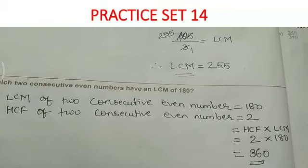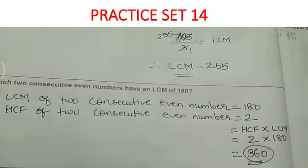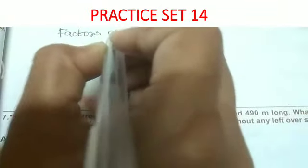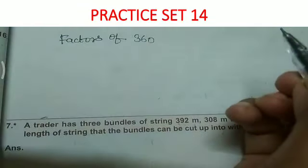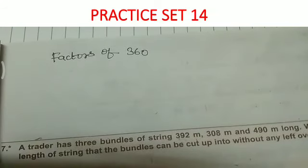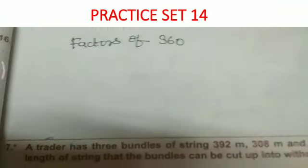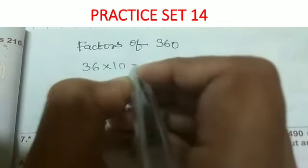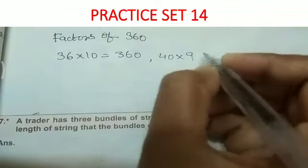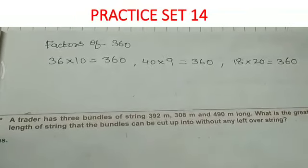We have to find two consecutive even numbers, so we find the factors of 360. The factor pairs of 360 are: 36 multiplied by 10 gives 360, 40 multiplied by 9 is also 360, and 18 multiplied by 20 is also 360. These are all factor pairs of 360.